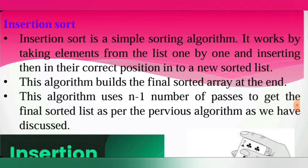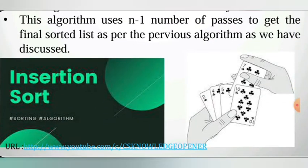Insertion sort is a simple sorting algorithm. It works by taking elements from the list one by one and inserting them in their correct position into a new sorted list. This algorithm builds a final sorted array at the end, using n-1 number of passes to get the final sorted list, as per the previous algorithm we have discussed.